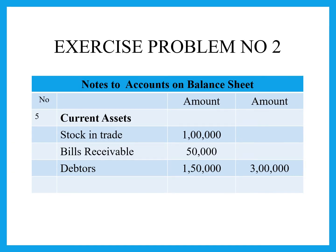Next are current assets. Stock in trade — that is closing stock — is 1 lakh rupees. Bills receivable is the money we need to receive for goods sold, which we will collect within the current year, so it goes under current assets, that is 1 lakh 50,000 rupees.